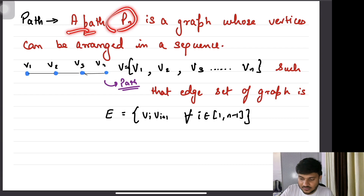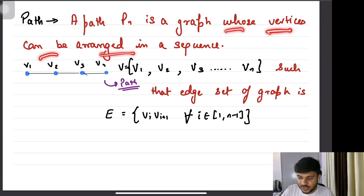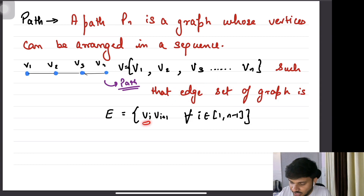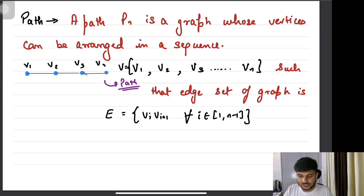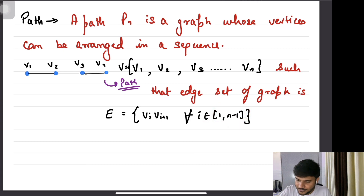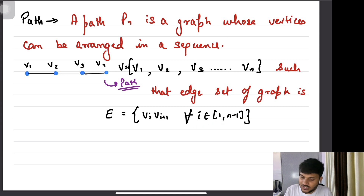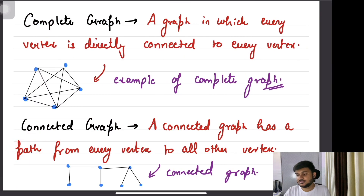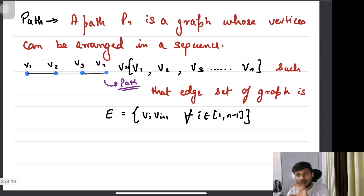Now what's a path? A path PN is also a type of graph whose vertices can be arranged in a sequence V1 to VN such that the edge set is of the form Vi, Vi+1. So V1-V2 has an edge, V2-V3 has an edge, V3-V4 has an edge. If you have a graph where the vertices can be arranged such that the edge set is Vi,Vi+1 for all i in the range 1 to N minus 1, then we say it's a path. A path can be a sub-graph of another graph also.